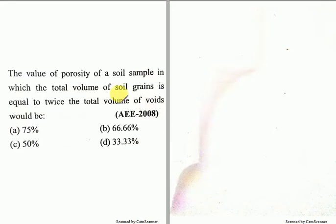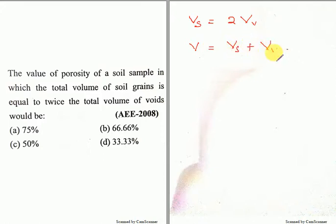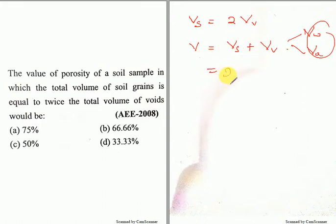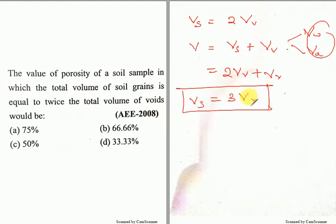The value of porosity of the soil sample in which the total volume of the soil grains is twice the total volume of the voids. So I can write Vs is equal to twice the volume of the voids. The total volume equals volume of solids plus volume of voids. Volume of voids contains volume of water and volume of air combined. So the total volume is Vs plus Vv, which is 2Vv plus Vv, equal to 3 times volume of voids, where Vs equals 3 times volume of voids.